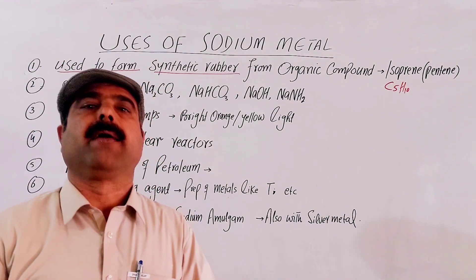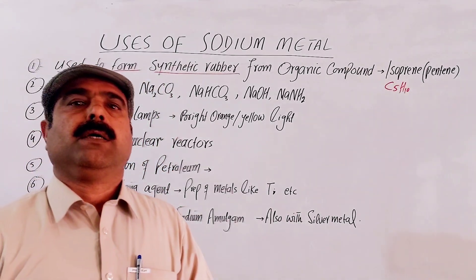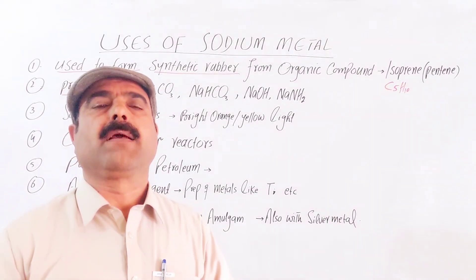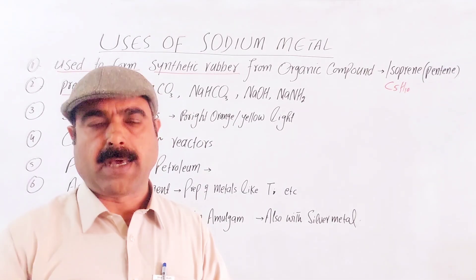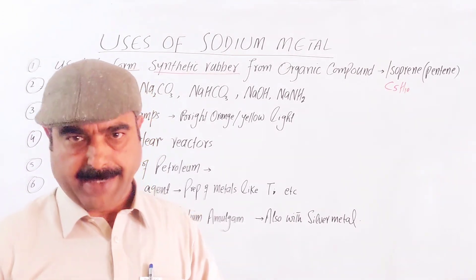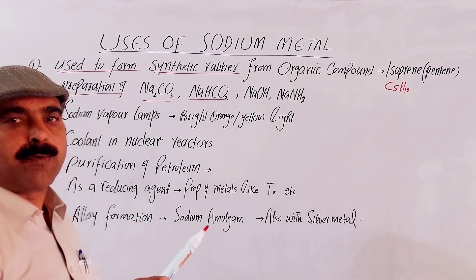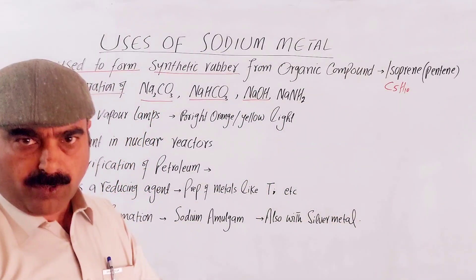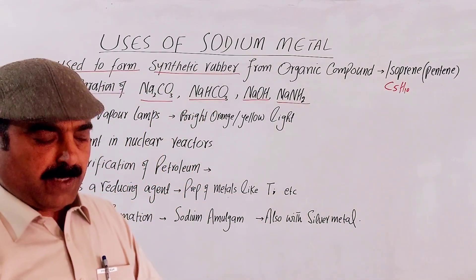Sodium metal is used for the preparation of some important chemical compounds, including sodium carbonate, sodium hydrogen carbonate (sodium bicarbonate), sodium hydroxide (also called caustic soda), and sodium amide.